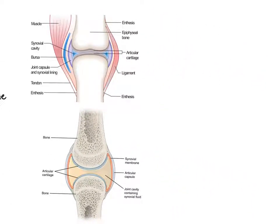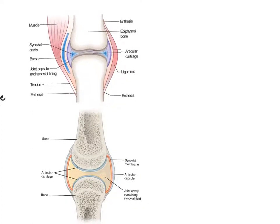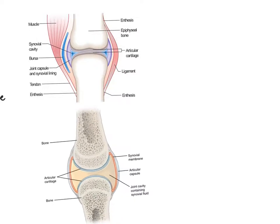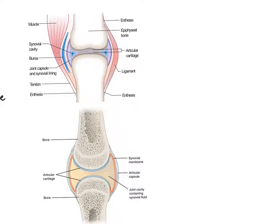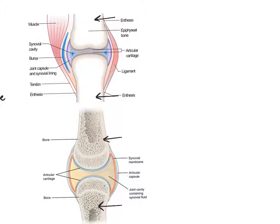Let's take a closer look at the synovial joint using two illustrations. You should be able to identify the key structures. First are the bones — there's a bone on top and a bone on the bottom interacting with each other. All three joint types involve connecting two bones, and in the synovial joint we also have a synovial membrane.